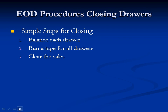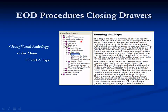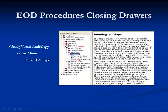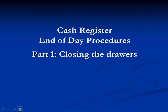Once you've done that, you're ready to go on to maintenance. If you want to find more information about the X and Z-Tape, you can find it in the Help System. Begin by going to Using Visual Anthology and then selecting the Sales menu, then X and Z-Tape. That concludes the Cash Register End of Day Procedures Part 1, Closing the Drawers.